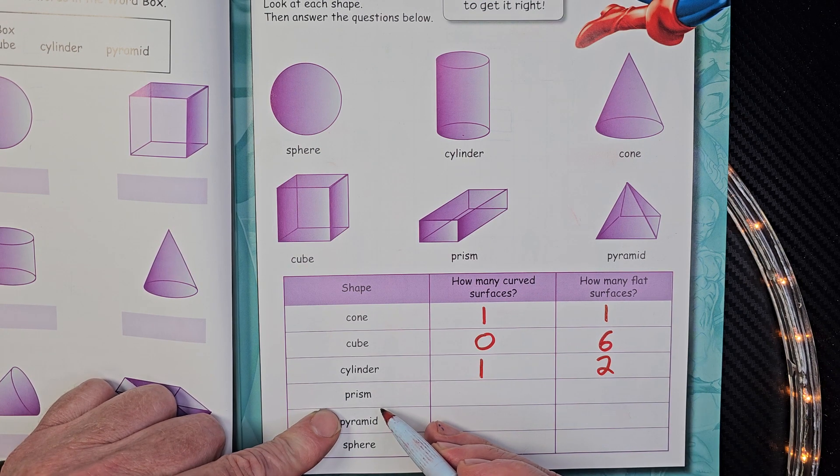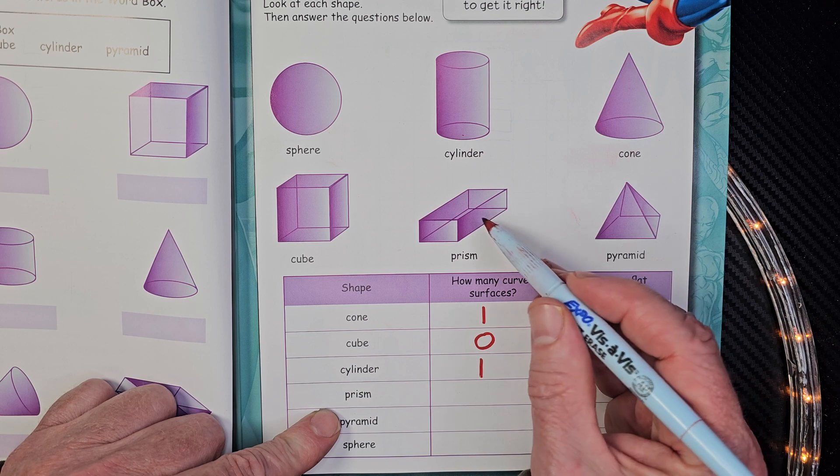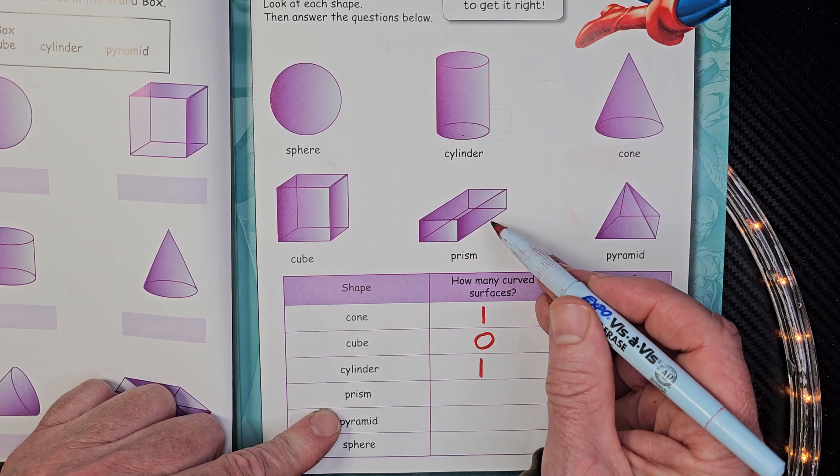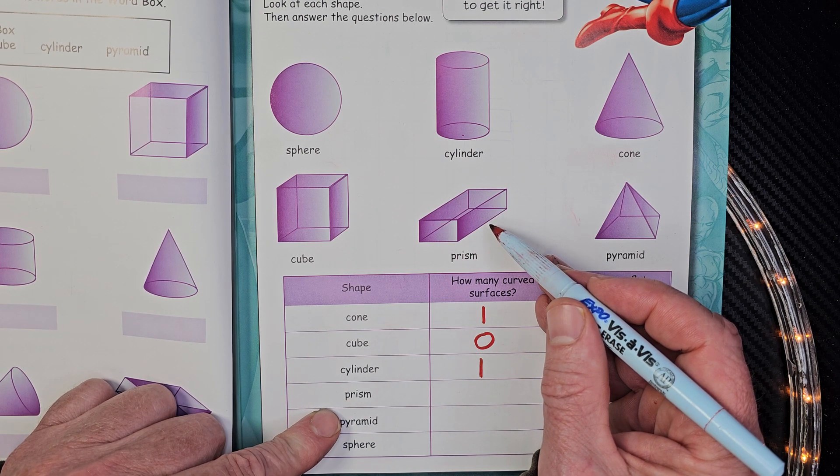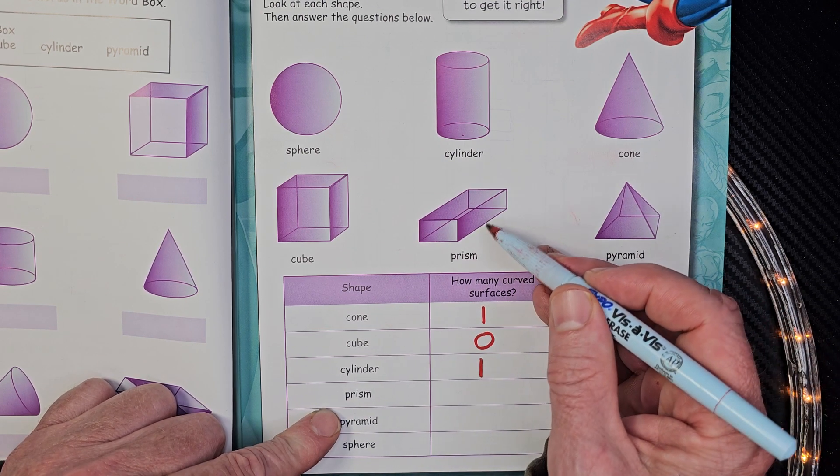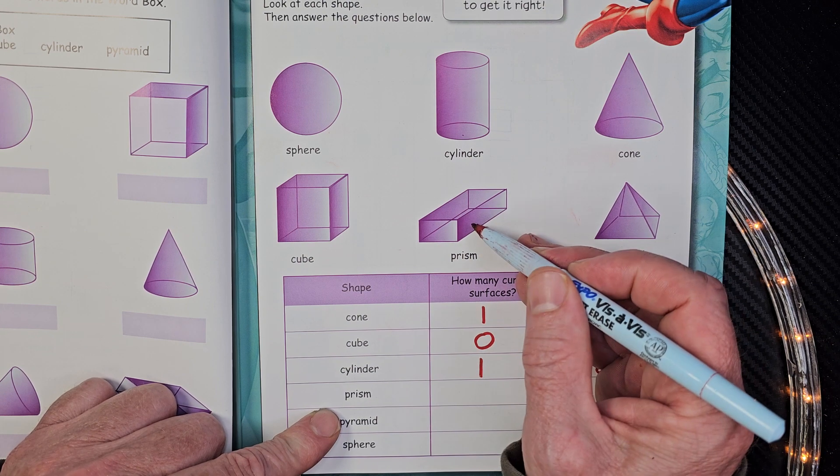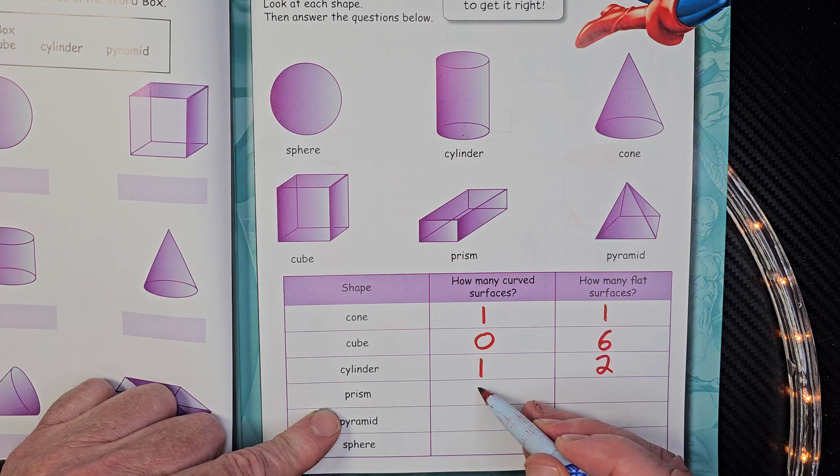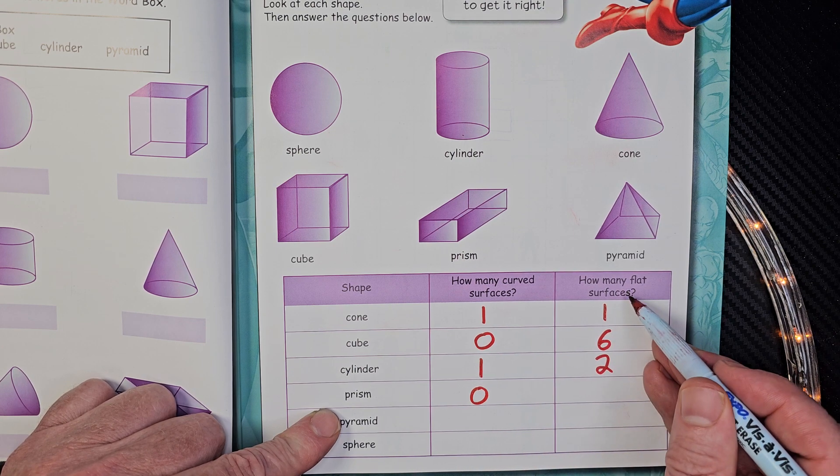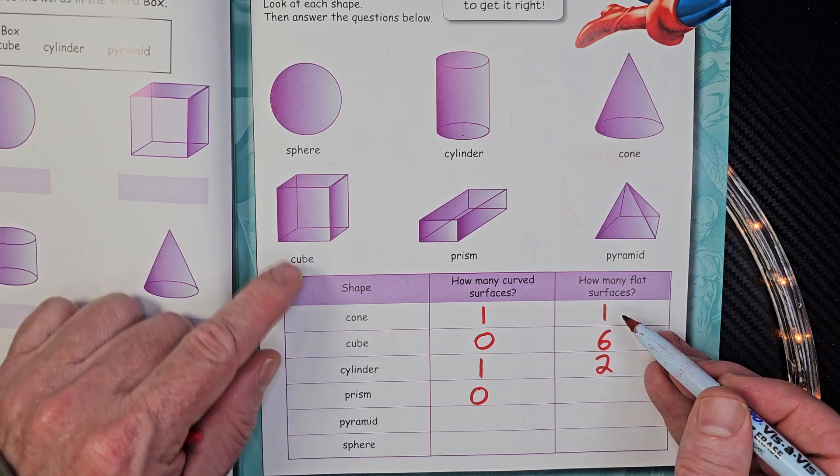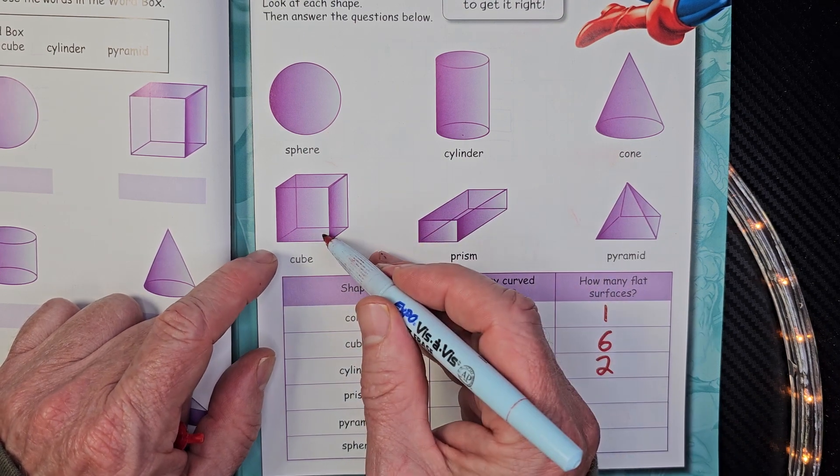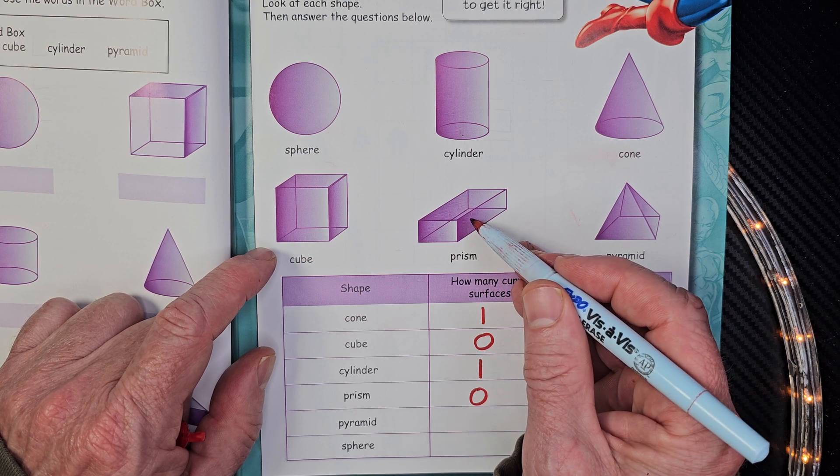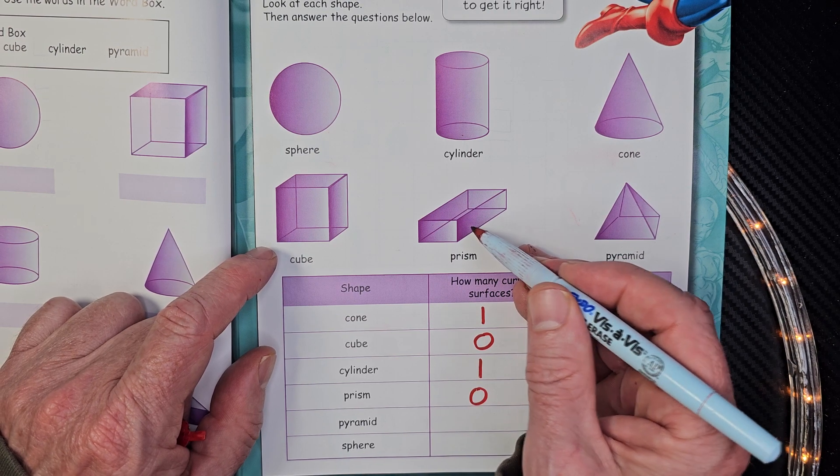Prism. Alright. Prism. Some people will call this a, or I guess I would call it a rectangular prism. That's what I would usually just call it. So that's a rectangular prism. How many curved surfaces are there? Zero. How many flat surfaces? Now, the cool thing about a rectangular prism and a cube is they have the same amount of faces, vertices, and flat surfaces.